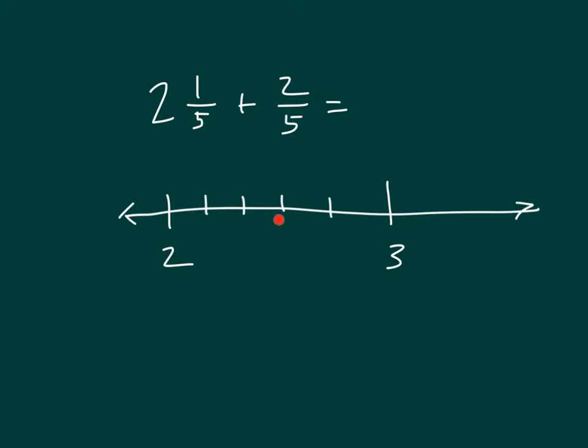And then the next whole number is 3 and we'll go ahead and divide our number line into 2 fifths. 1, 2, 3, 4, 5 parts. 2 and 1 fifth, we'll go ahead and mark that right onto our number line. And if we are adding, in this case, 2 fifths, that means we'll go ahead and travel 2 fifths to the right on our number line. So we've got plus 2 fifths.